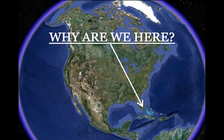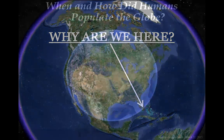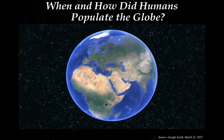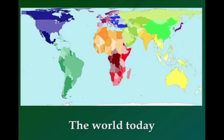And since there's no better place to start than the beginning, we ask yet another question: when and how did humans populate the globe? In this first map, you see the world as it is today. The different colors here actually signify different regions — that's all they're showing.